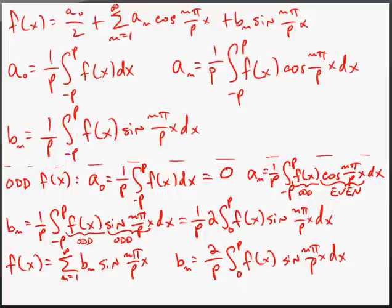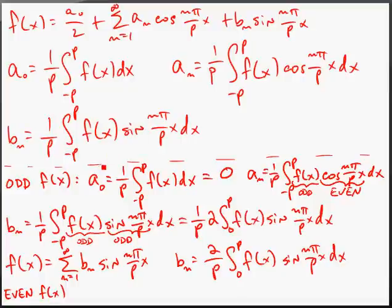Similarly, for an even function f(x): notice that bₙ will disappear. Since f(x) is even and sin(nπx/P) is odd, their product is an odd function. The integral of an odd function from -P to P is zero, so bₙ = 0. What remains are a₀ and aₙ, because those involve even-function integrands.